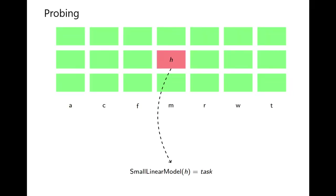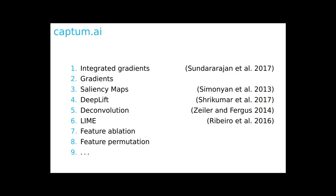We've seen the neural network analysis method of probing, where you train a small linear model to predict out the value of a variable from neural representations. And we've seen that there are many feature attribution methods, where neural representations are assigned a score based on how they impact the output of the model.